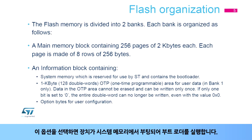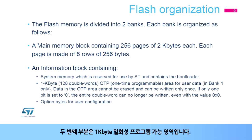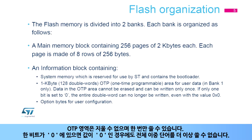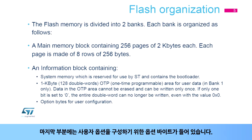When selected, the device boots in system memory to execute the bootloader. The second part is a 1KB one-time programmable area, located in bank 1 only. The OTP area cannot be erased and can be written to only once. If one bit is at 0, the entire double word can no longer be written, even with the value 0. The last part contains the option bytes for configuring user options.